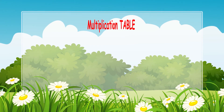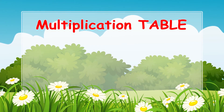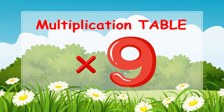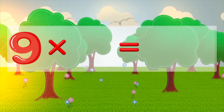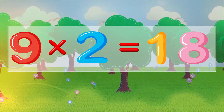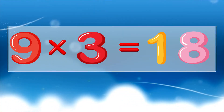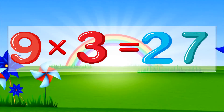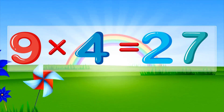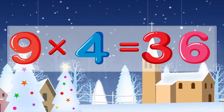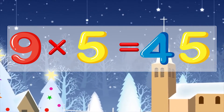Nine times table. Nine times two is eighteen. Nine times three is twenty-seven. Nine times four is thirty-six. Nine times five is forty-five.